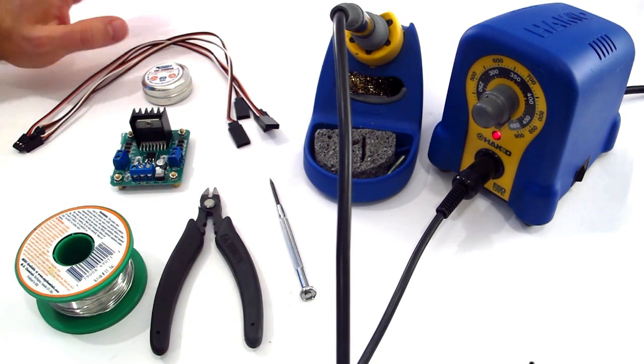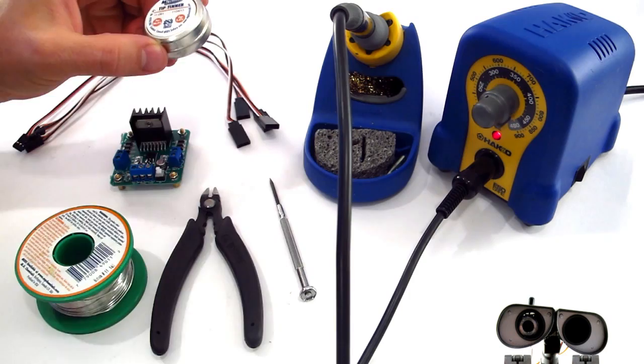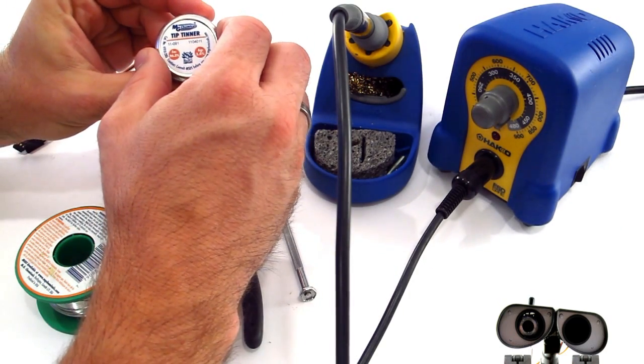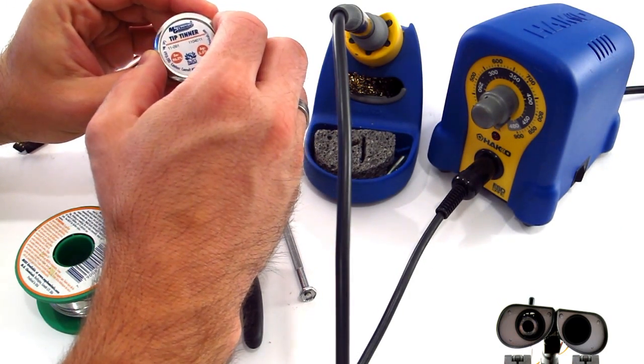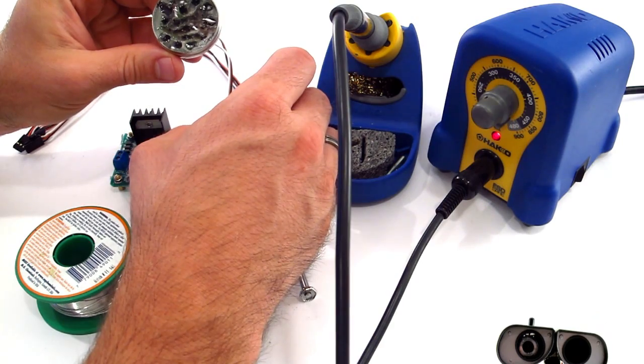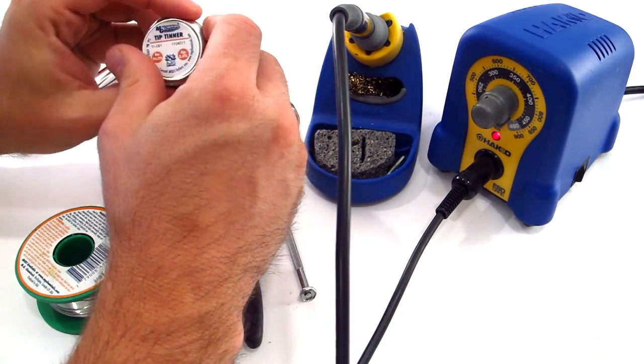five peripheral cables, and because you're going to be using ROHS tin solder, this is the tip tinner. You can get these at most electronic shops, and it's great for cleaning the end of your soldering iron when you're not using lead-based solder.